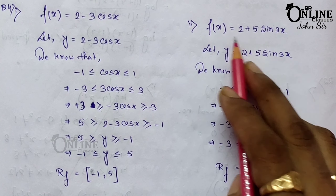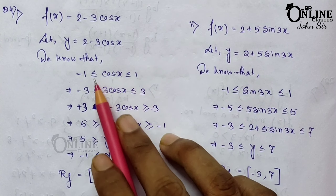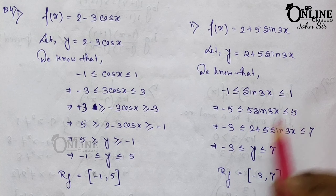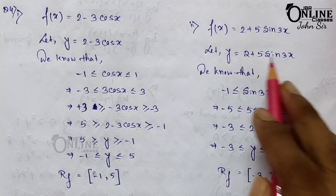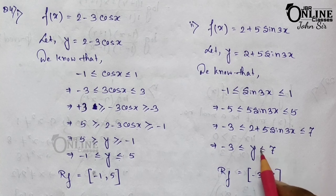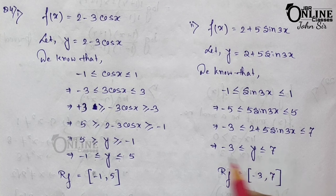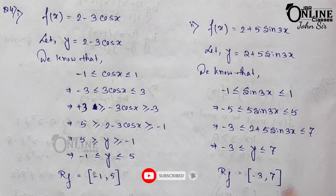Next: f(x) = 2 + 5sin 3x. For sin, the range is always −1 ≤ sin(3x) ≤ 1. Multiply by 5: −5 ≤ 5sin 3x ≤ 5. Add 2: −3 ≤ 2 + 5sin 3x ≤ 7. So −3 ≤ y ≤ 7, meaning the range is the closed interval [−3, 7].